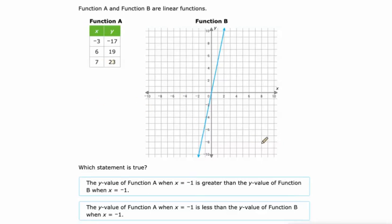Similar idea here, but we're given a table and a graph, and we're being asked about where X is negative 1. So on function B at negative 1, we get a Y value of negative 5. What about A? Let's figure out slope here. Wow, from negative 17 to 19, that's an increase of 36. And from negative 3 to 9, that's an increase of 9. 36 divided by 9 is 4.